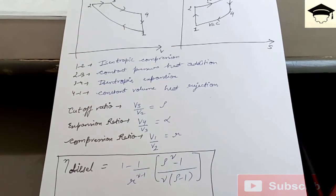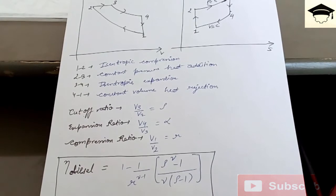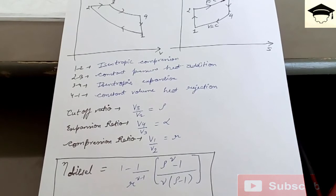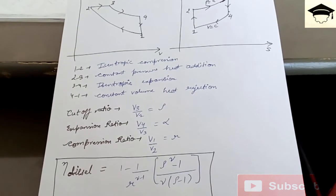where γ is 1.414 (that is Cp upon Cv), r is the compression ratio, and ρ is the cutoff ratio.